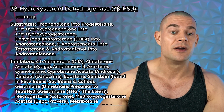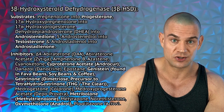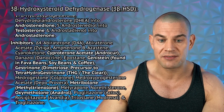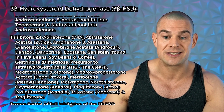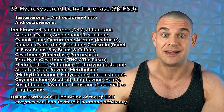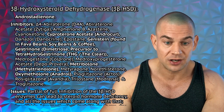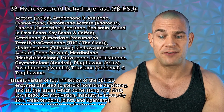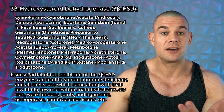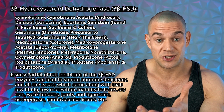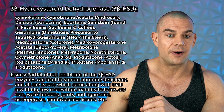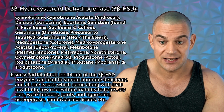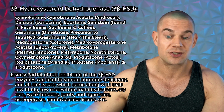The inhibitors of this enzyme are cyproterone acetate, also known as Androcur, which is a medication also prescribed for hormonal acne. Genistein is a naturally occurring isoflavone, described as an angiogenesis inhibitor and phytoestrogen, found in several food sources including tofu, fava beans, soybeans, and even coffee — although I couldn't really find strong evidence that coffee can inhibit these enzymes and reduce the conversion of pregnenolone into progesterone, DHEA into androstenedione, or androstenedione into testosterone. There's no solid evidence that coffee can actually reduce testosterone levels.